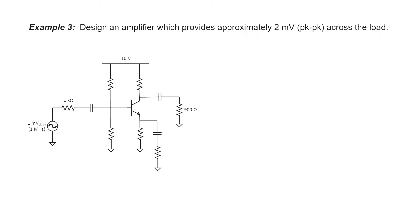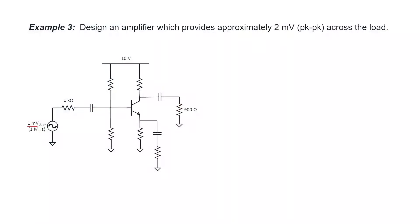Let's now design an amplifier which provides approximately 2 mV peak-to-peak across a load. Since we're starting with a source that provides 1 mV peak-to-peak, what we're looking for is an amplifier with an overall gain of 2. Let's start by providing an appropriate DC bias point. I like to use 10 kilohm resistors because it makes the math easy. With a power supply at 10 volts, that's going to create 5 volts DC at the base, 4.3 volts at the emitter, and if I use a 1 kilohm resistor here, we're going to have 4.3 milliamps of emitter current.